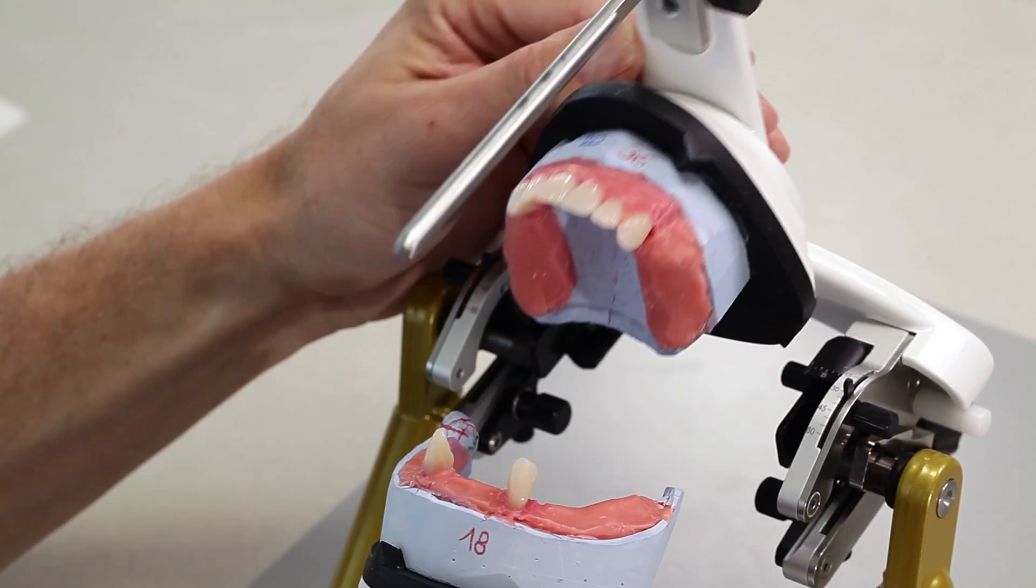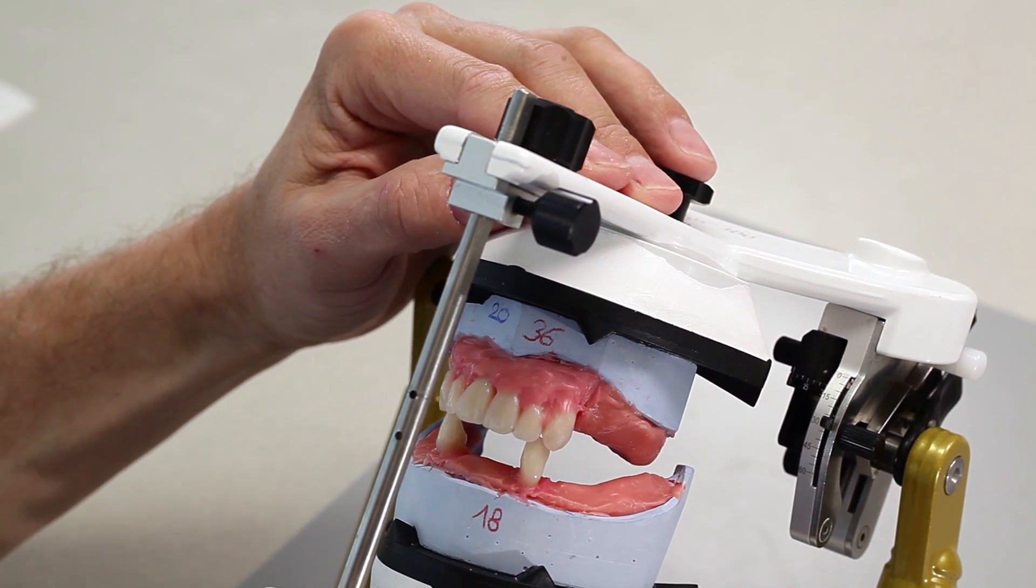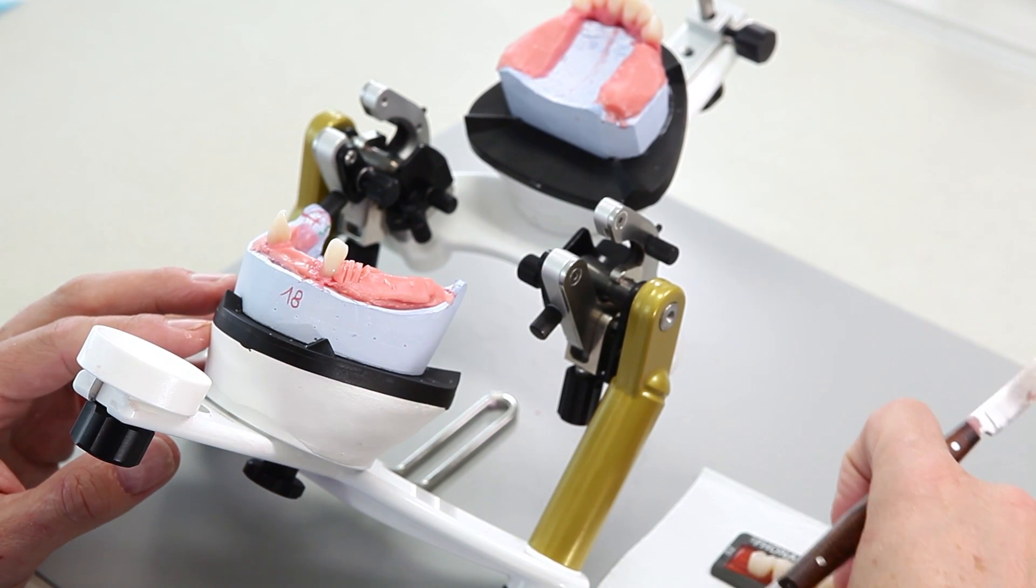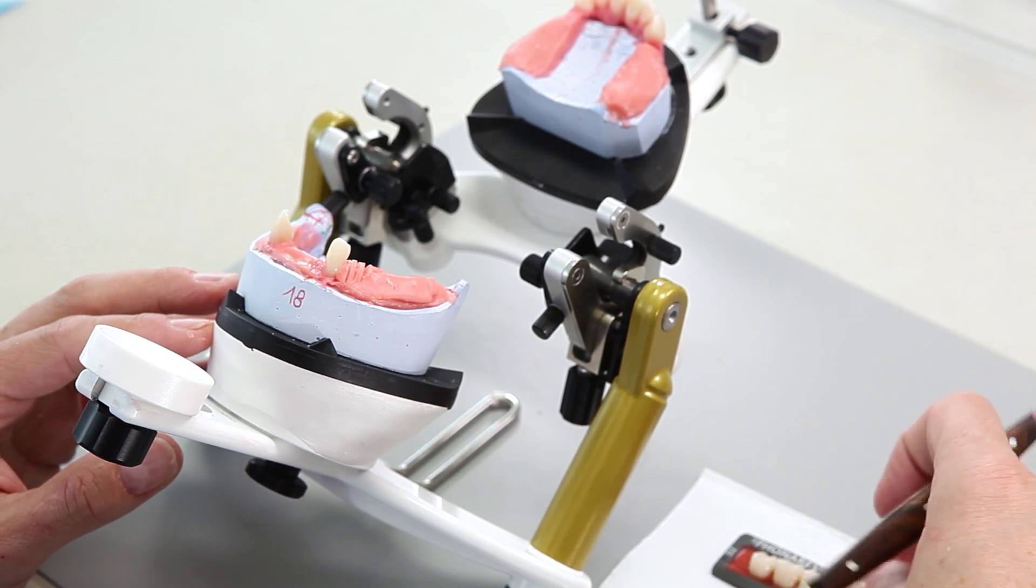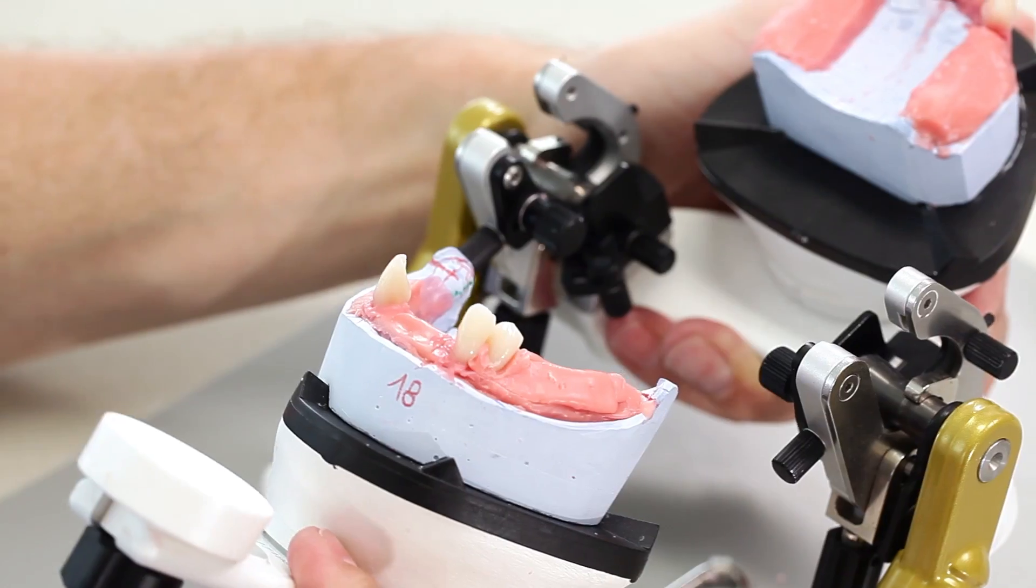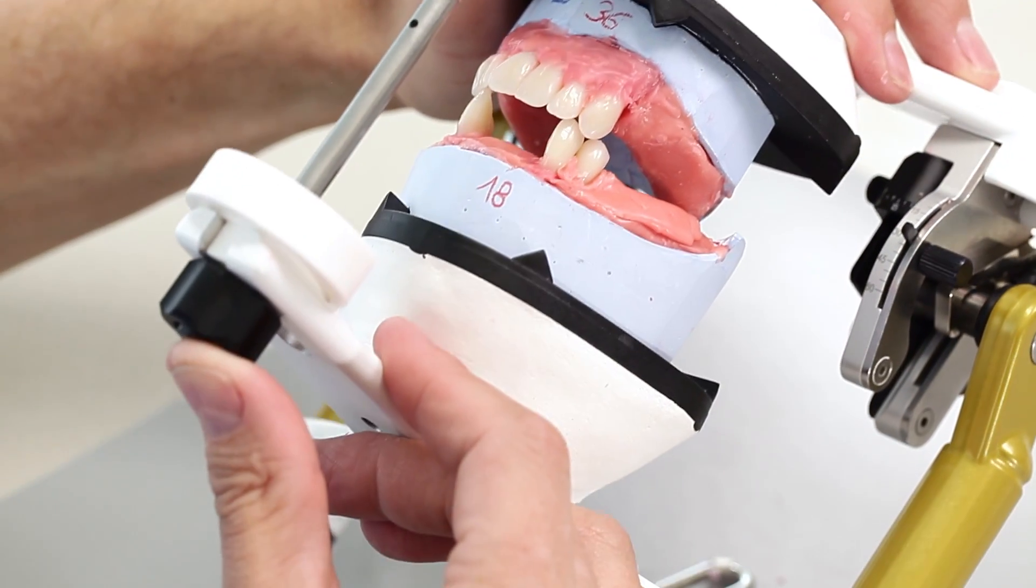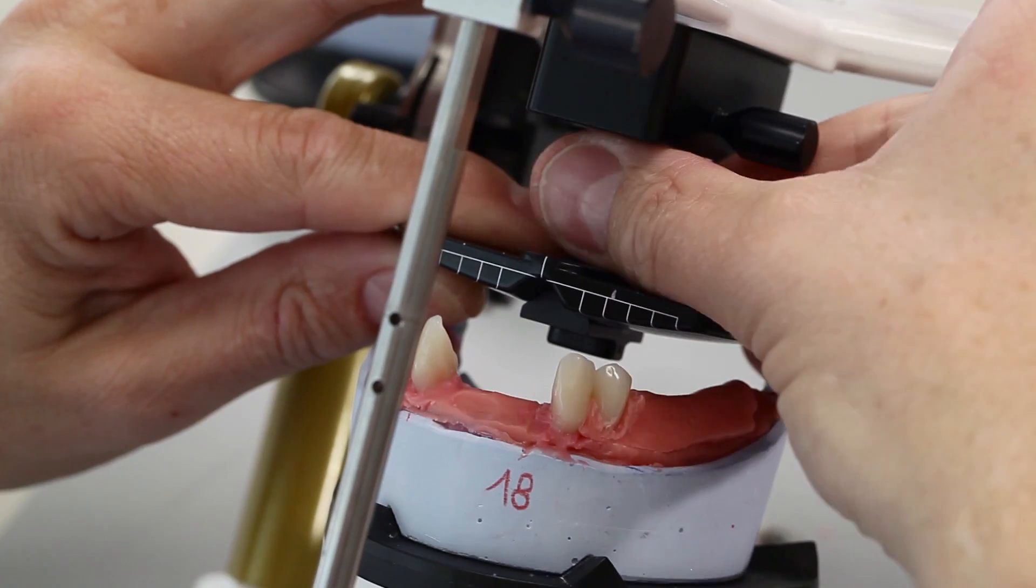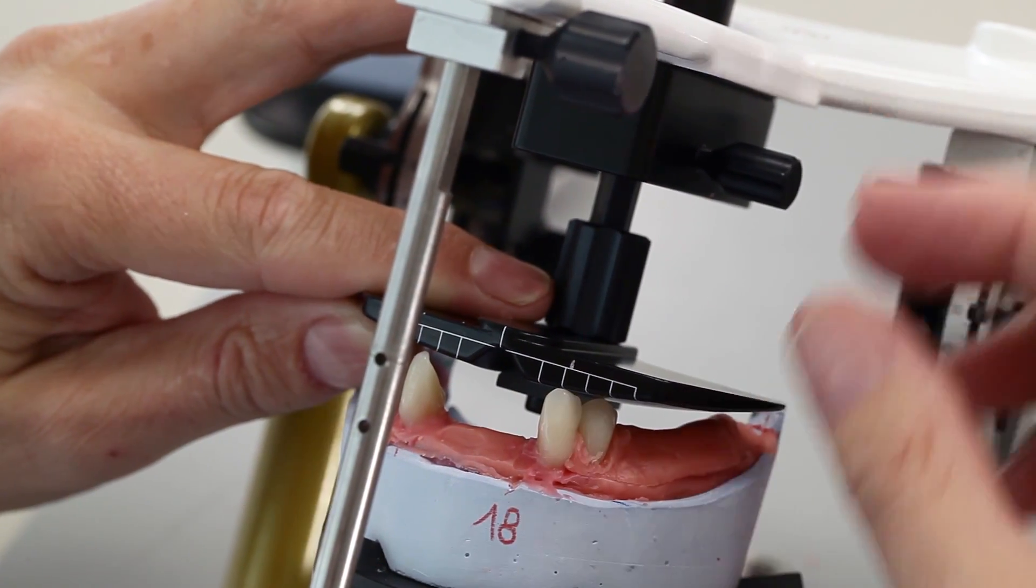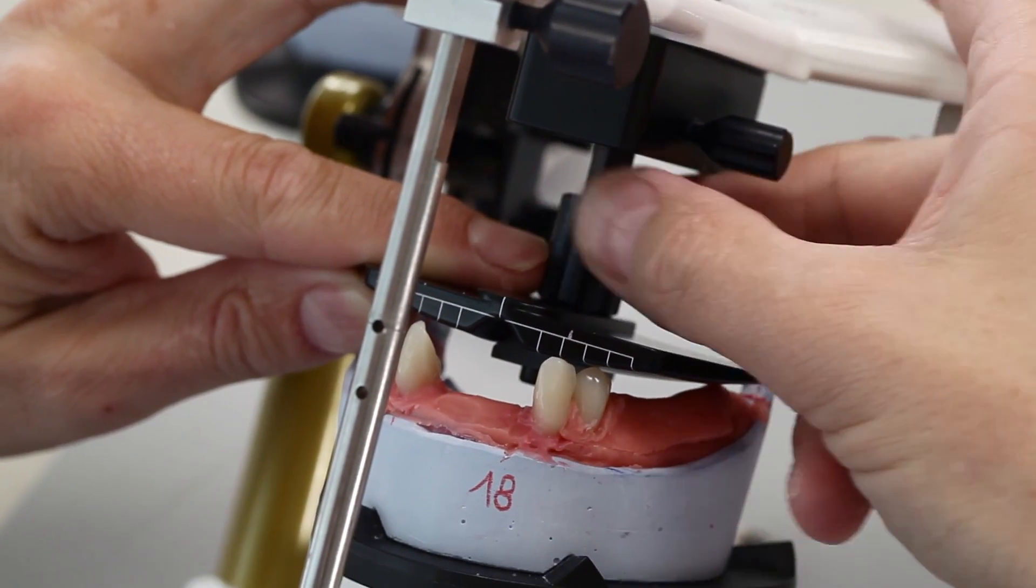It's important to set up the canine out of contact which ensures reliable group guidance in the posterior region. Position the first premolar in such a way that a smooth transition to the canine is achieved. This means that the distal slope of the incisal edge is flush with the mesial rise of the first premolar. Adjust the template for the posterior tooth setup for which the bottom side of the anterior part is aligned according to the cusp tip of the mandibular canines.